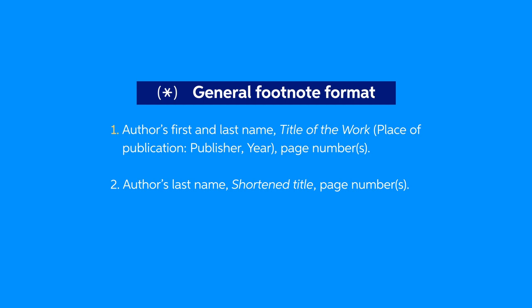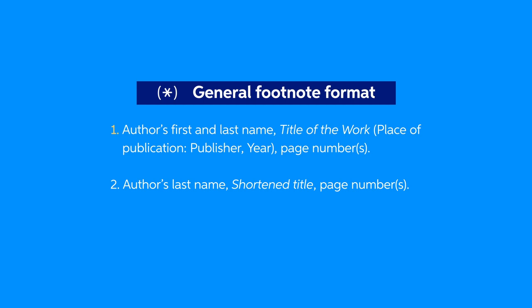Footnotes will usually follow the same format. Start with the footnote citation number — this number should match the superscript number you have at the end of the sentence where the source is quoted or paraphrased. Next, write the author's first and last name, followed by a comma. Then write the title of the work you're citing in italics.